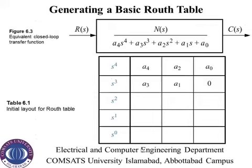We are more concerned about the denominator characteristic equation. In this case, we have a fourth order polynomial in its generalized form: a4·s^4 + a3·s^3 + ... You have to create a Routh table. The first two rows are filled directly from the coefficients of the characteristic polynomial — the even powers in one row and the odd powers in the next.